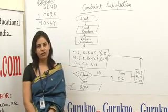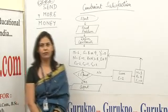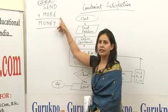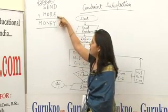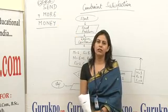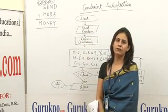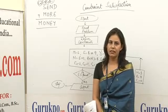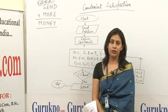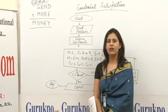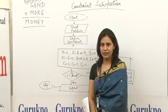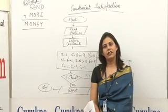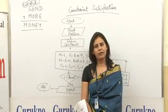One example of constraint satisfaction is to solve the crypt arithmetic problem. In this example, we need to satisfy the constraint: CENT plus MORE equals MONEY. We need to assign a unique decimal digit to each letter, following a few constraints. First, we can assign only decimal digits to these letters.